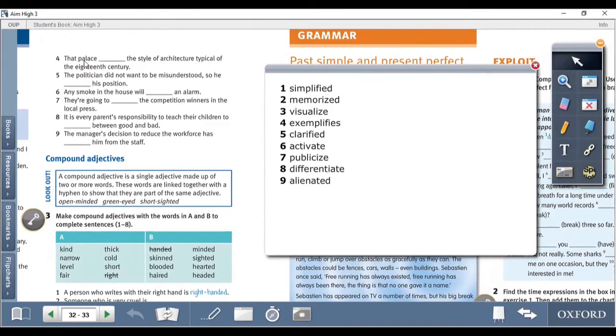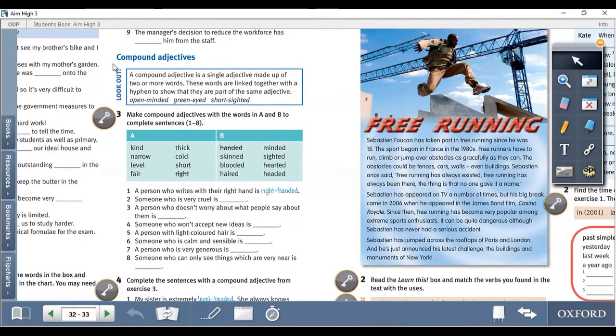Number five, the politician did not want to be misunderstood so he clarified his position. Number six, any smoke in the house will activate an alarm. Number seven, they're going to publicize the competition winner in the local press. Number eight, it is every parent's responsibility to teach their children to differentiate between good and bad. Number nine, the manager's decision to reduce the workforce has alienated him from the staff.